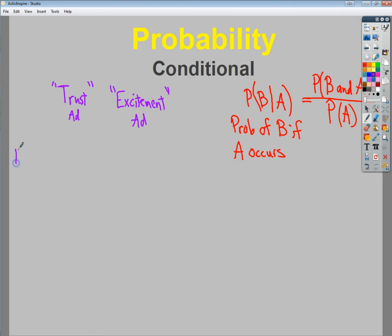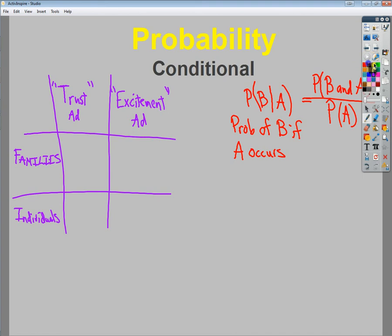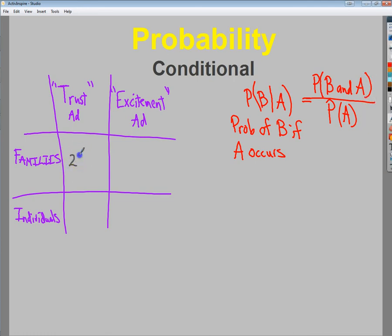So on one hand, I have families. And on the other hand, I have individuals or singles. So I will say that in my little study, I find that as far as families go, of the trust ad, let's say 2,100 family accounts chose that trust ad, whereas 900 chose the excitement ad.